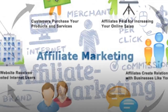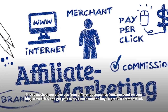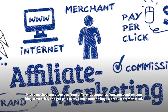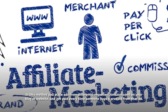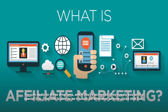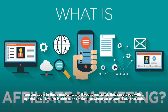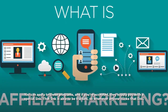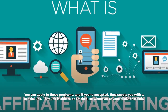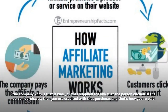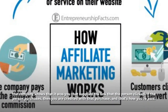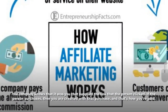Affiliate marketing: in this method you place ads from different companies like Amazon.com on your blog or website and get paid every time someone buys a product from that ad. You can apply to these programs and if you're accepted, they supply you with a special link. That link is tracked so whenever anyone clicks it, the company knows it was you who supplied it.